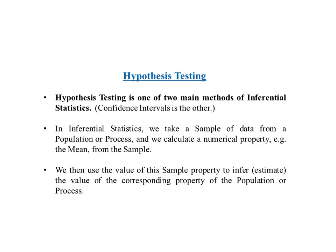Hypothesis testing is one of two main methods for inferential statistics — the other method is confidence intervals. In inferential statistics, we cannot get all the data in a population or process because the population or process is too big or it keeps changing. So we take a sample of data and calculate a statistical property, say the mean, of the sample. We then use that calculated mean to estimate or infer the mean of the population or process.